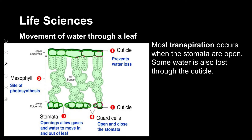This picture shows palisade mesophyll, spongy mesophyll, and the parts involved in transpiration — namely stomata with guard cells. Another important feature is the waxy cuticle on the outside of the leaf; water cannot easily move through the waxy cuticle unless it is very, very thin.